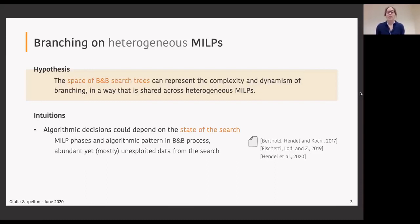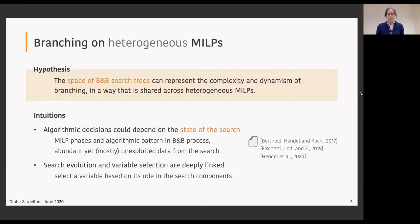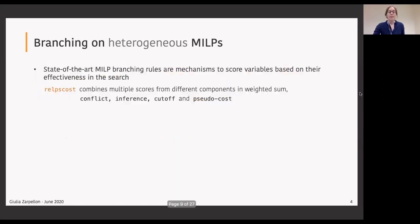Our hypothesis is that while generic MILPs might not have in common a parametric structure, they might actually share a higher order structure in the space of branch and bound search trees which can be used to represent the dynamism and complexity of branching. Behind this hypothesis, the first intuition is that some algorithmic decisions could depend on the state of the search. There exist algorithmic patterns in the branch and bound process, MILP resolution phases according to which some algorithmic decision could be tuned or adopted, and these patterns and phases can be identified and described with statistical use of the data from the search.